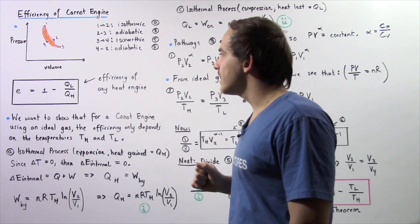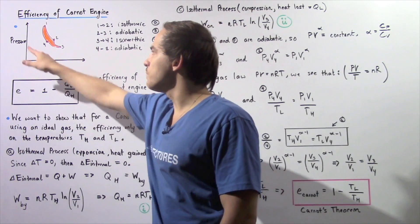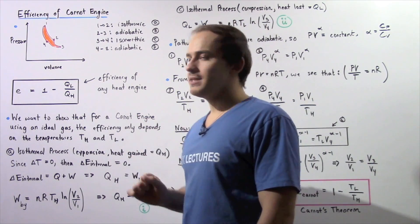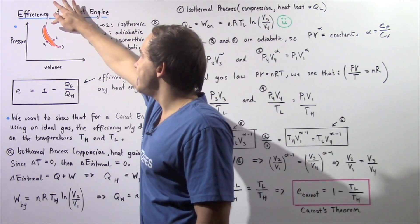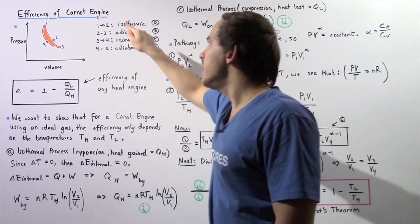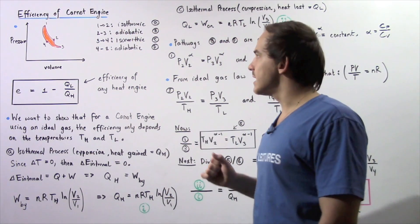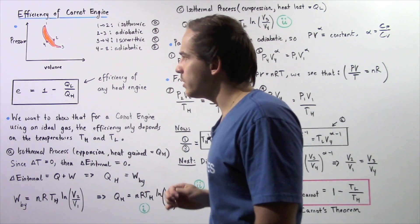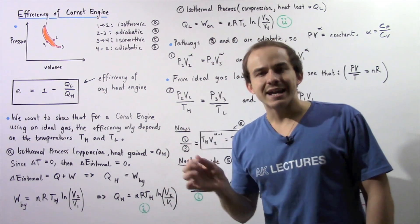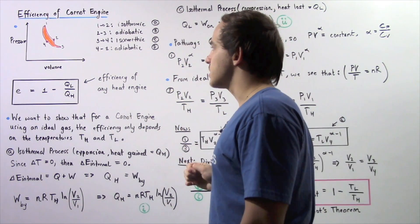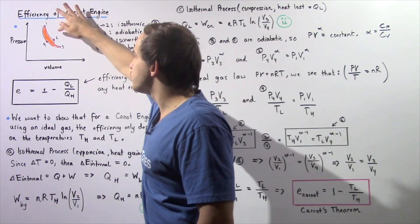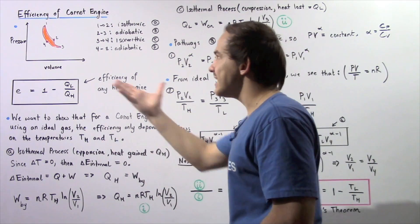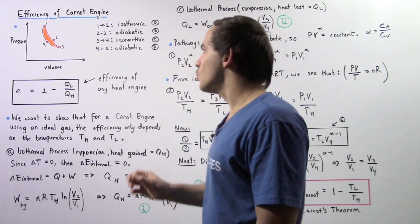Let's look at the following diagram. Our x-axis is the volume and the y-axis is the pressure. There are four different reversible processes taking place. When we go from initial position 1 to position 2, that is an isothermal process — let's call that process A. When we go from position 2 to position 3, that is an adiabatic process — let's call that process B. When we go from 1 to 2 and from 2 to 3, our volume increases, so the gas inside Carnot's engine expands.